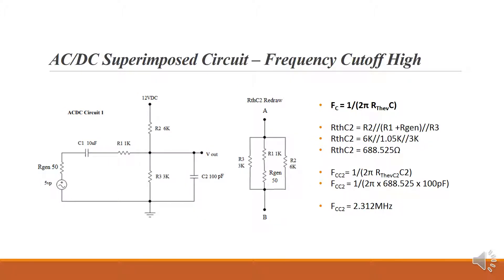For frequency cutoff high, the bypass capacitor C2 affects the high cutoff frequency. The Thevenin redraw for C2 is R3 in parallel with R1 in series with R gen in parallel with R2, giving R Thevenin C2 of 688.525 ohms. Using the frequency cutoff formula, we calculate a frequency cutoff high of 2.312 megahertz.